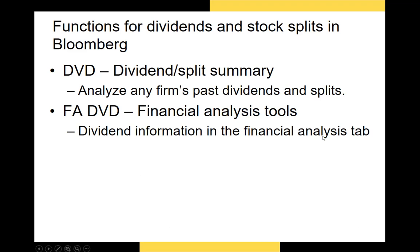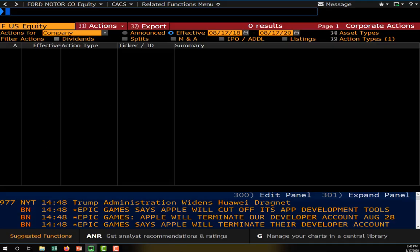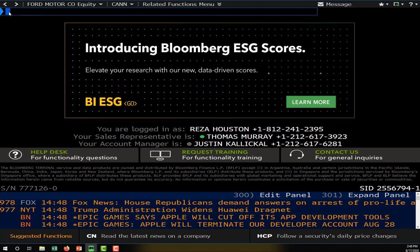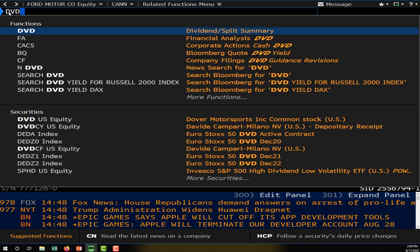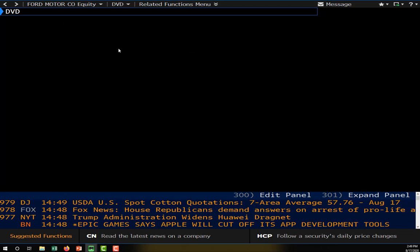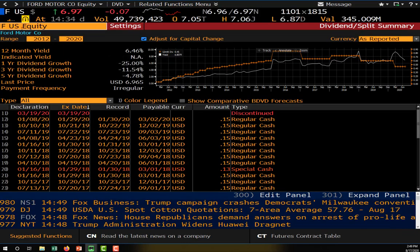Now let's look at dividend and stock split data from Bloomberg. There are two functions I want to show you: the DVD function, which is used for looking up dividends and splits, and the financial analysis function FA to search for dividends.